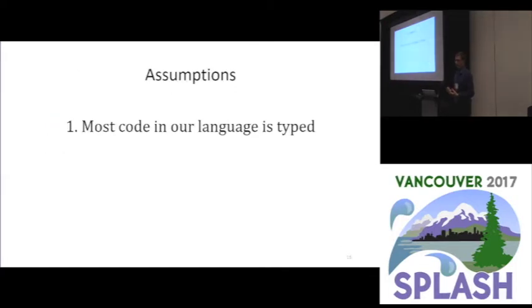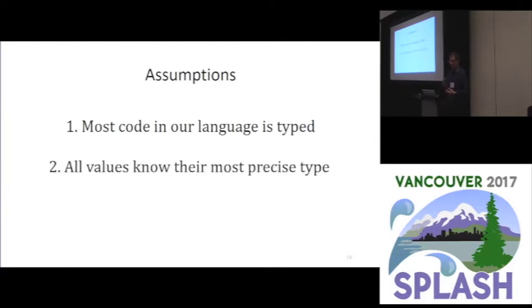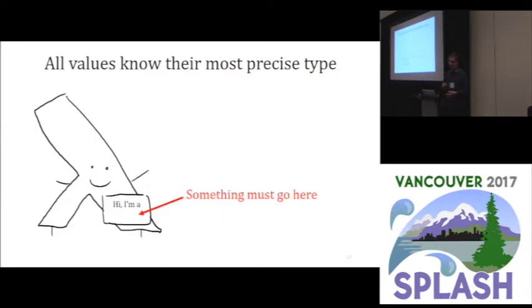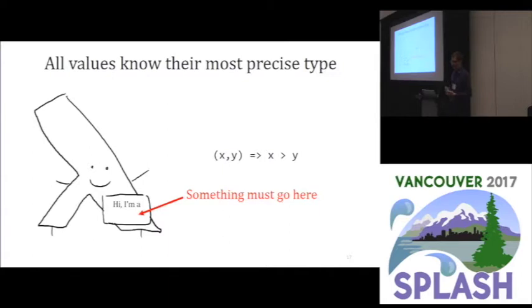Now that we've made our first assumption, let's take advantage of it by making a more concrete assumption, which is that all values know their most precise type. This does not only hold for simple and compound types, but also for higher order types. So from a user's perspective, if they want to write a Lambda, they'll need to explicitly state what interface that Lambda is implementing. The correct interface depends on the context, but if we assume that we wrote this Lambda as a custom comparator for sort, then it becomes clear that we need to declare that Lambda to be a comparator.